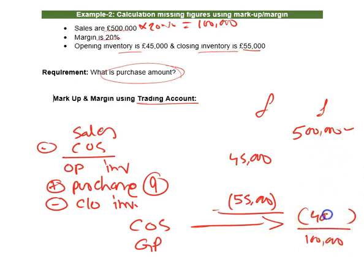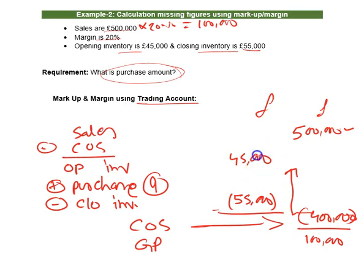Five hundred thousand minus one hundred thousand leaves four hundred thousand — that is your cost of sales. Now work backwards: minus becomes plus, plus becomes minus. Your purchases for the year come to four hundred and ten thousand. You can verify: forty-five thousand plus four hundred and ten thousand, minus fifty-five thousand, still gives four hundred thousand.